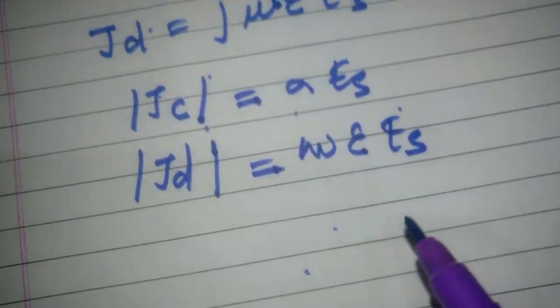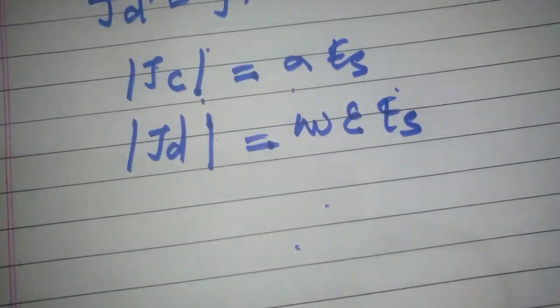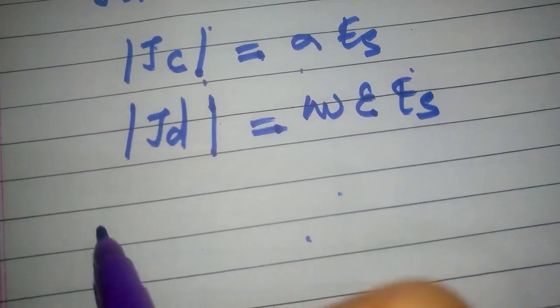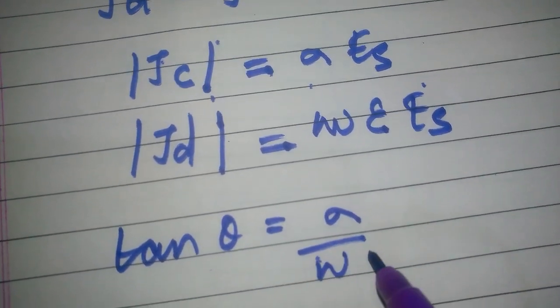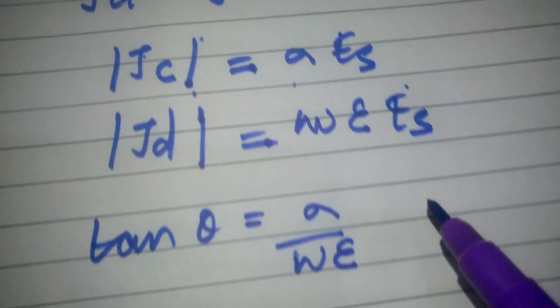On taking ratio of both values, what we get is sigma upon omega epsilon. This ratio is said to be the loss tangent.